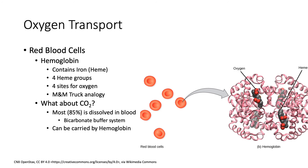Once oxygen diffuses from the alveoli into the capillaries, your red blood cells — which are a component of your blood — have a protein called hemoglobin. Hemoglobin is the main carrier of oxygen throughout your circulatory system. Hemoglobin is named because of a group called a heme group. There's an image here to the right. We have one, two, three, four different heme groups found in every hemoglobin molecule. So that means each heme group is a site for one oxygen to bind, meaning each hemoglobin molecule can bind four oxygen molecules.